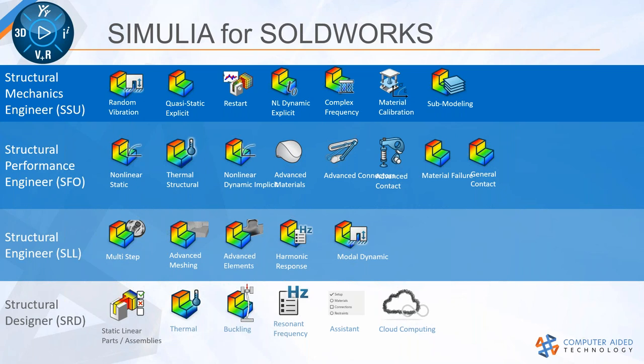They've been ported onto the 3D Experience platform. This is where we get into crazy nonlinear analysis, general contacts, material failures, and all that fun stuff. All of these roles can leverage cloud computing in some way and include some level of cloud computing capability right out of the box. You can buy extra cloud compute credits to increase that capability. The structural mechanics engineer and structural performance engineer have eight cores of cloud compute each, and the other two roles are four cores each.